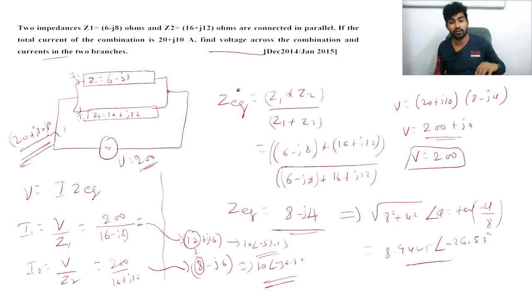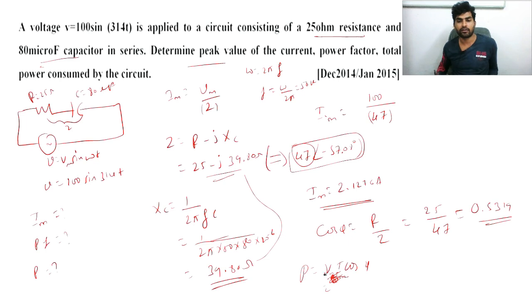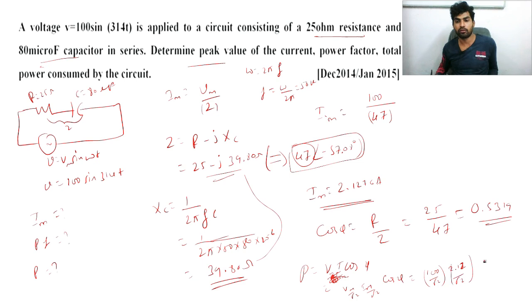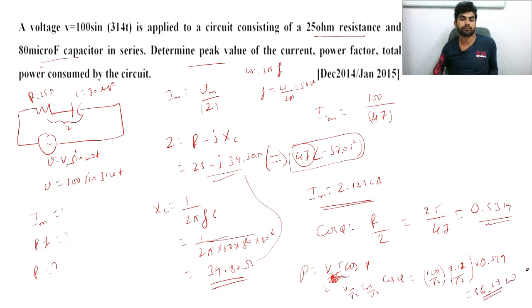Power for Problem 2 (cross-check): Power = (Vm/√2) × (Im/√2) × cos φ, where Vm = 100, Im = 2.127, cos φ = 0.539. Finally we get 56.58 watts. You can convert between rectangular and polar forms using a calculator.